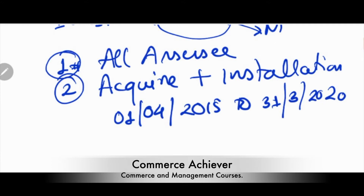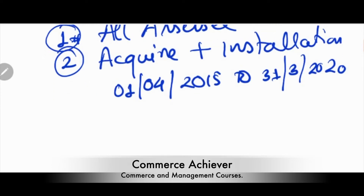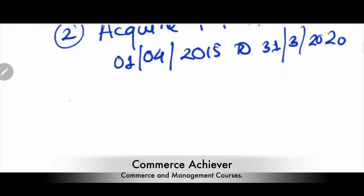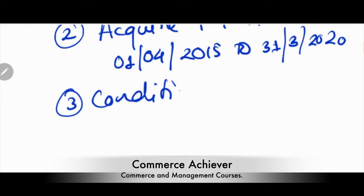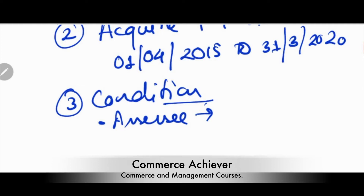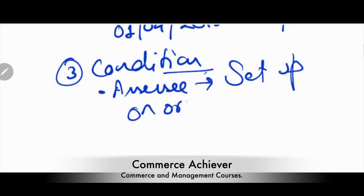The conditions in Section 32 AD require that the SSC undertaking or enterprise must have been set up on or after 1 April 2015, and both acquisition and installation must be completed within the specified period.